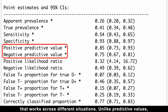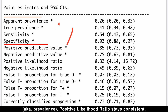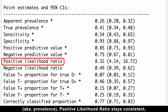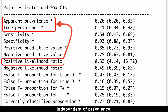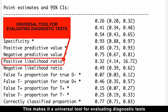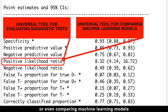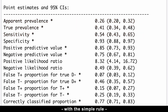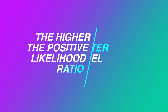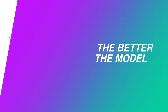Unlike predictive values, which change depending on how common the disease is — aka prevalence — the positive likelihood ratio stays consistent, independent of prevalence. This makes it a universal tool for evaluating diagnostic tests or even comparing machine learning models. With a simple rule: the higher the positive likelihood ratio, the better the model.